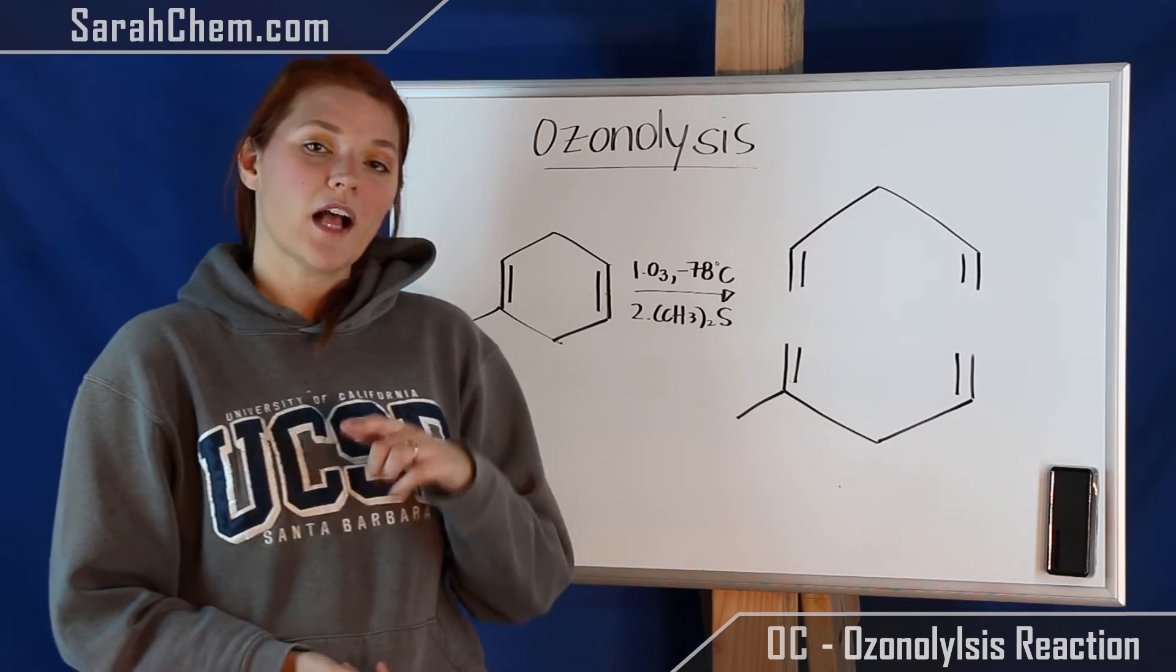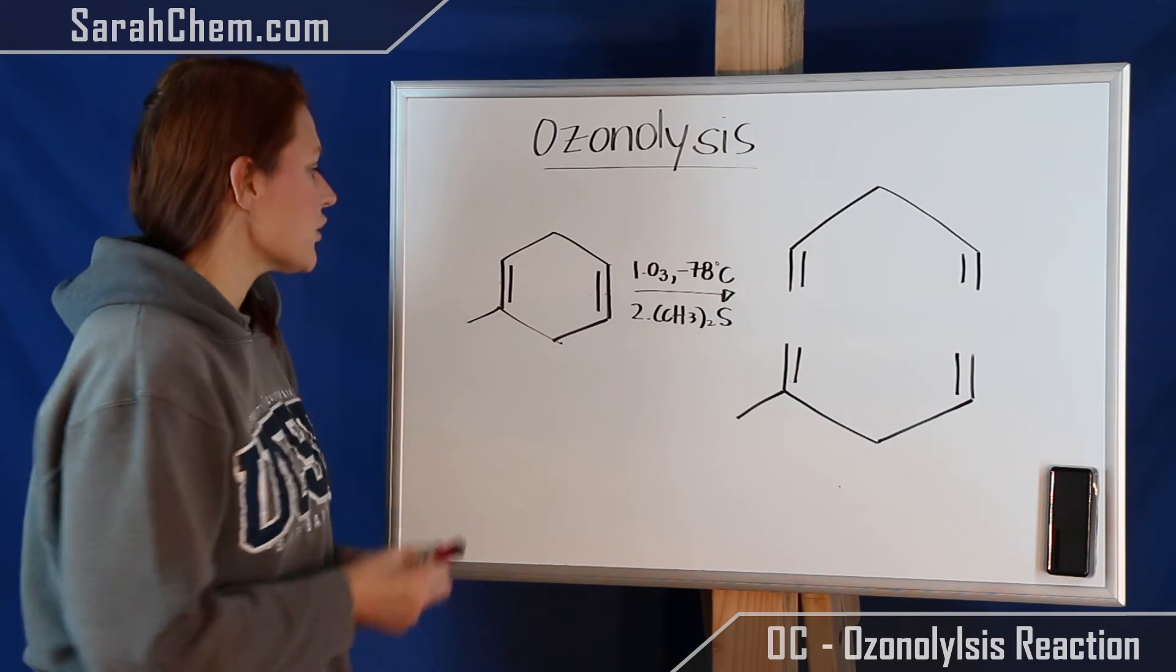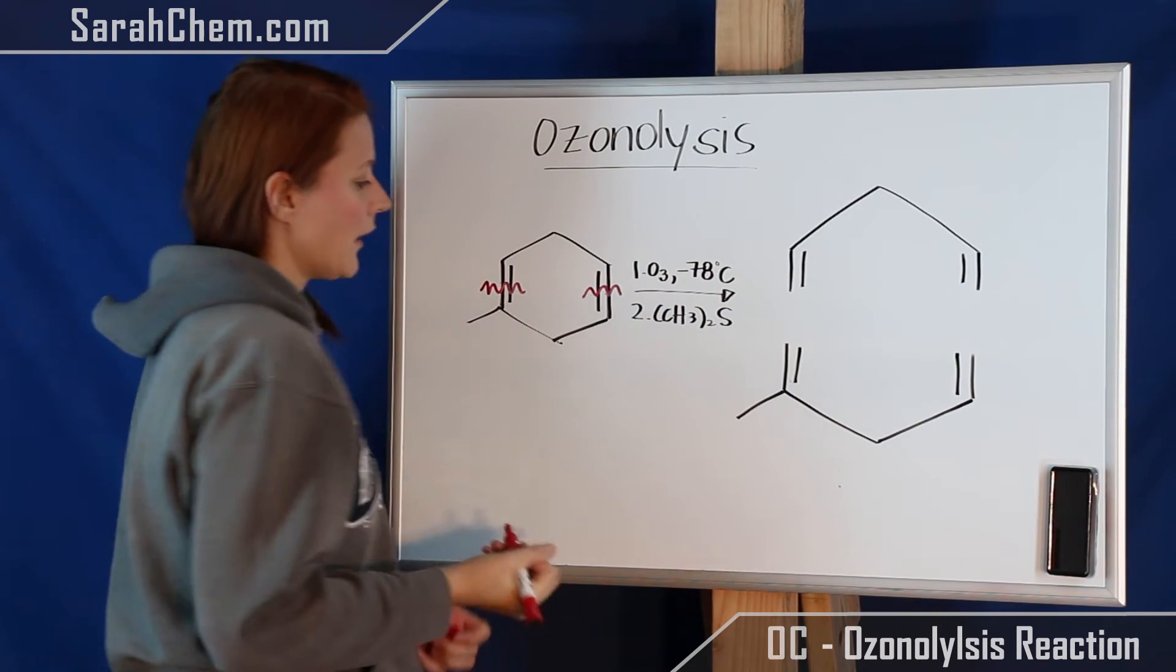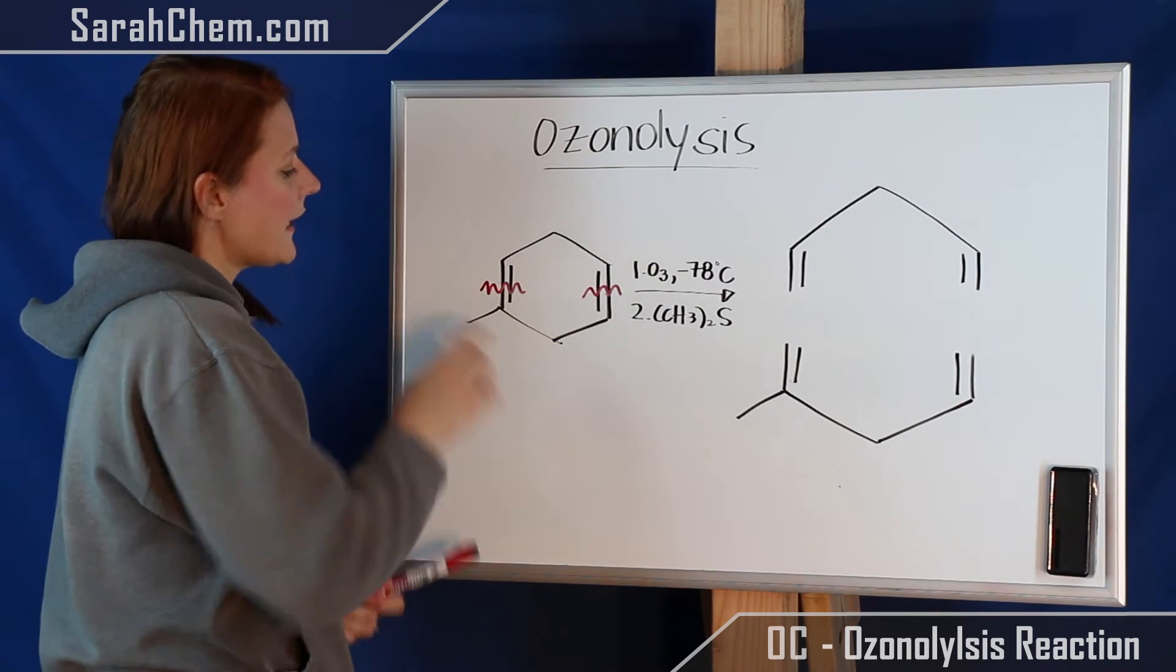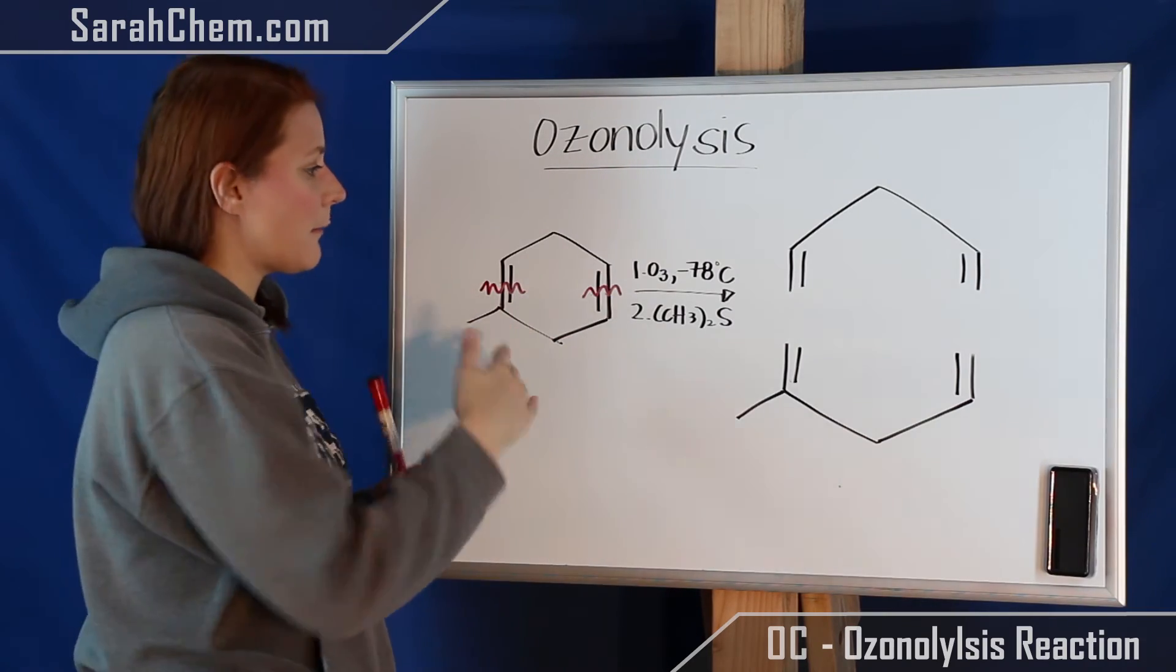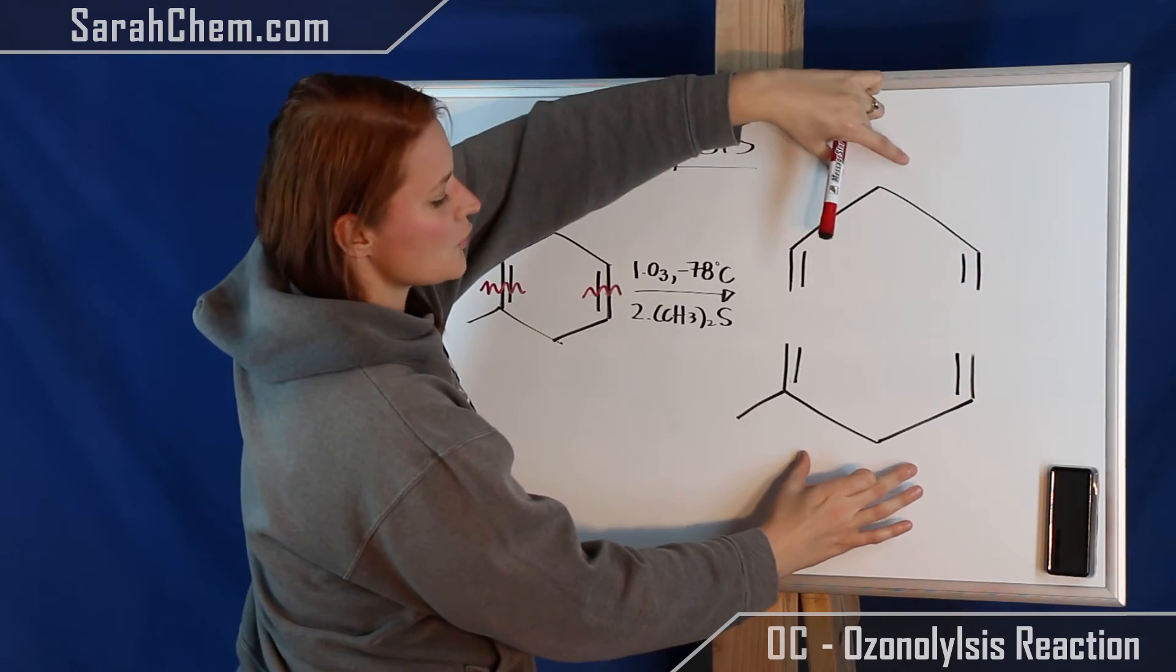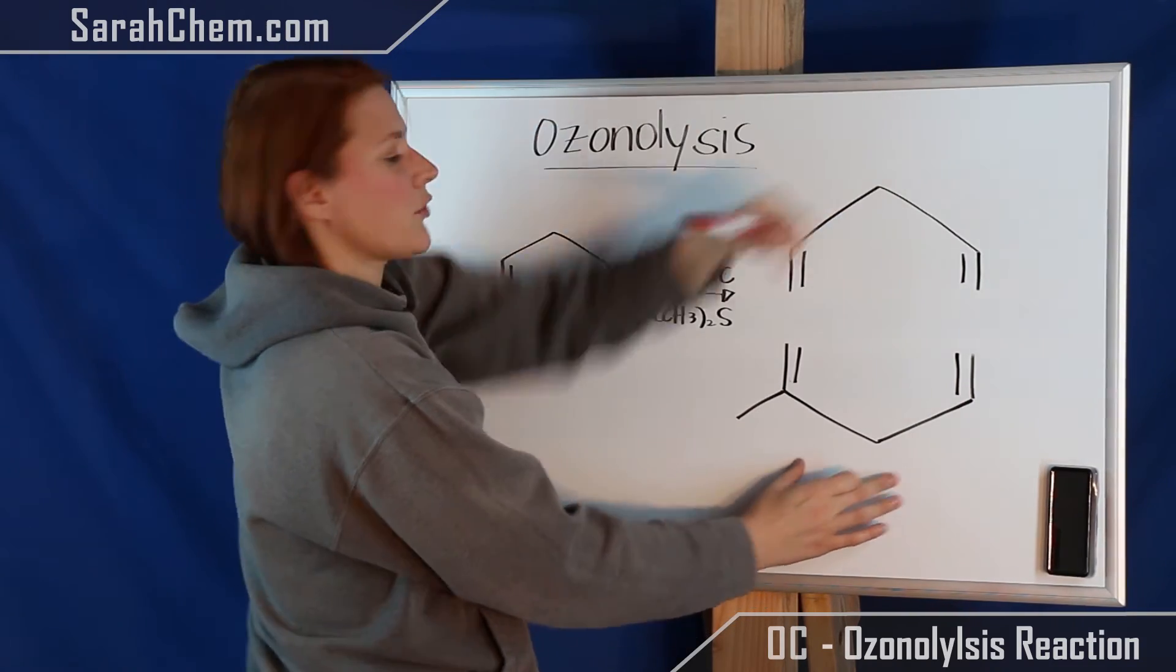Now what I'm going to do to help myself predict the product is to take these double bonds and I'm going to cut them in half. Essentially what I'm saying is that you're going to cut each of those double bonds down in the middle so that you're wanting to pull them apart and separate them, which is what this drawing here is supposed to be illustrating.